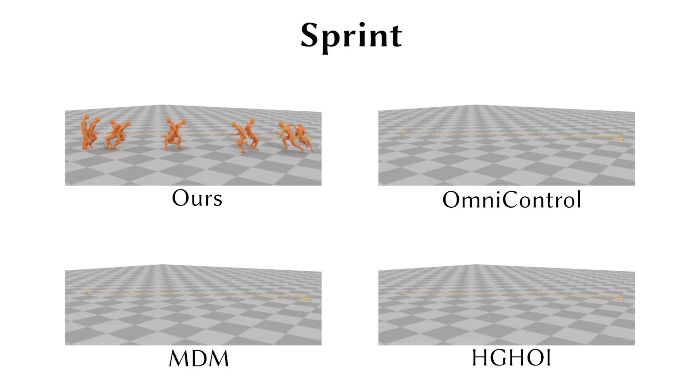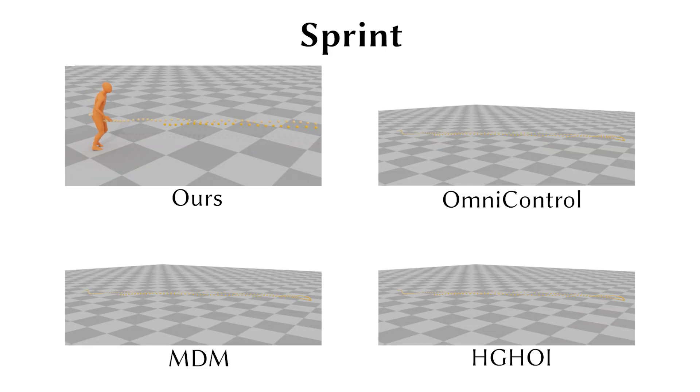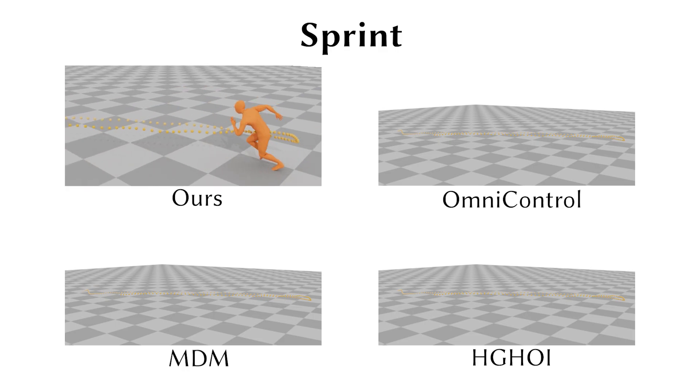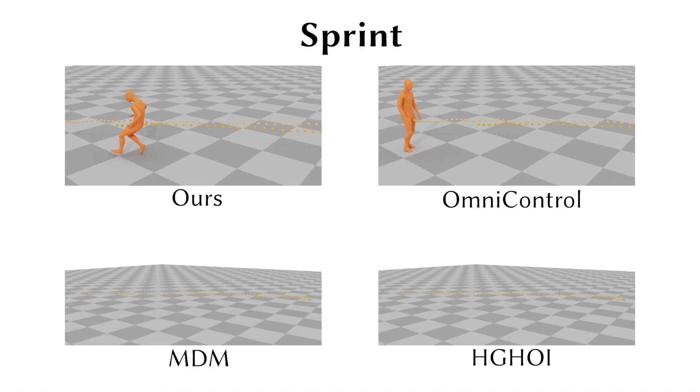In another example of sprinting, our method produces results that closely align with the trajectory, demonstrating a natural deceleration before the turning point and showcasing a reasonable change in motion tempo.